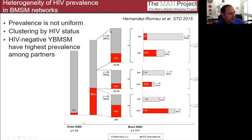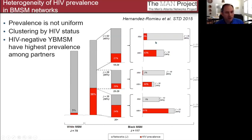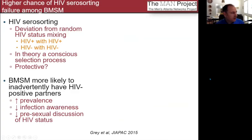Breaking down Black participants by age, there's variation in the positivity prevalence of their partners. The youngest men had about 25 to 27 percent positive partners. When young Black MSM told us they had HIV-negative partners and we tested those partners, nine percent of those believed-negative partners were actually positive. This speaks to the risk for younger Black MSM — even when they may be discussing serostatus with partners, those partners may not know they're living with HIV.